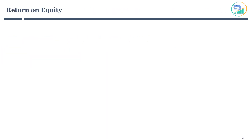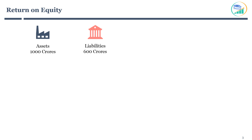Let's take an example to understand return on equity. A company has assets worth 1,000 crore. However, these assets are financed through a bank loan worth 600 crore. This is a liability for the company. Let's calculate the net value of the company, which is assets minus liabilities. The net value of the company is 400 crore. This is actually the shareholders' equity.